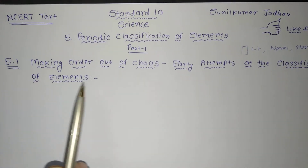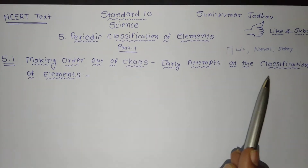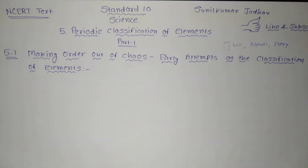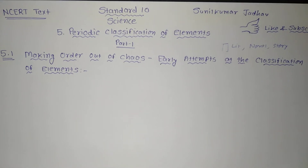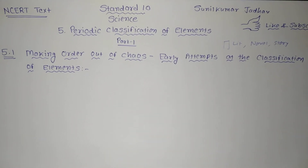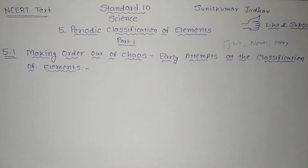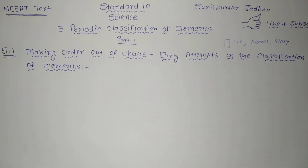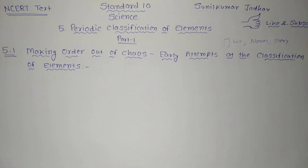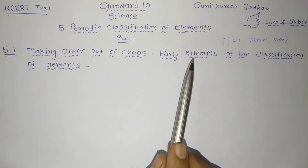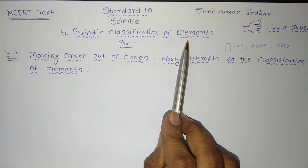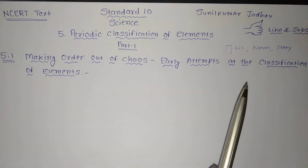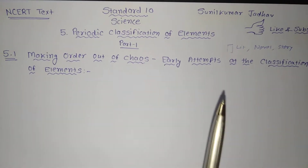Section 5.1.1: making order out of chaos — early attempts at the classification of elements. We have been learning how various things or living beings can be classified on the basis of their properties. Living organisms are mainly classified into two categories, that is plant and animal, or into eukaryotes and prokaryotes. Similarly, the periodic classification of elements means that when elements were discovered, scientists were thinking about how to arrange them, and that chaos was solved by early attempts to classify the elements.